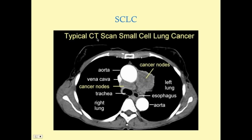On CT of the chest with contrast, small cell lung cancer appears as a central mass near the trachea — recall that small cell and squamous cell cancers are both central. If a patient is already known to have LEMS, a central lung mass strongly suggests small cell cancer, though squamous cell cannot be excluded on imaging alone.